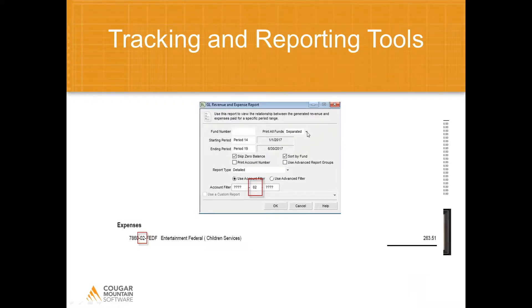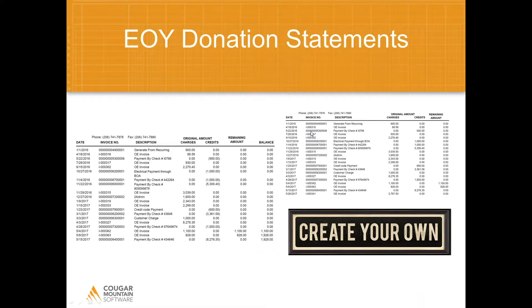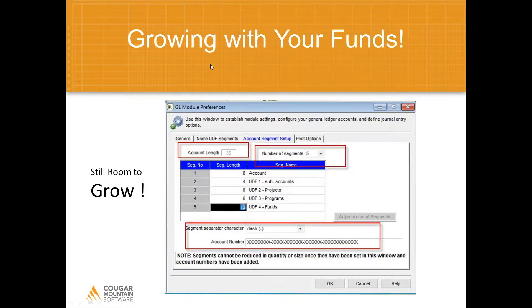Some of the reporting options in Denali Fund Accounting are far superior to other accounting systems. With QuickBooks, you have generic reports. With Denali, you have several built-in options, including the ability to customize using the Crystal Reports writer program. It's very important to keep track of end-of-year donation statements in a nonprofit accounting system. QuickBooks provides a generic statement, but with Denali you can customize that statement and any other report. Denali also provides direct access to its databases to generate the information you need on your reports.